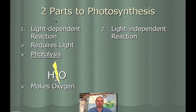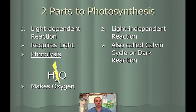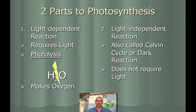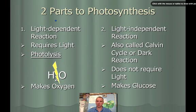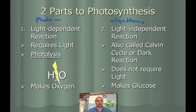The other part is the light-independent reaction, meaning it does not need light to go. Back when I was in school, it used to be called the dark reaction, but that's a misconception — it doesn't mean it takes place at nighttime. It's light-independent, meaning it could take place in darkness, but it just doesn't need light. You often hear it called the Calvin cycle or the light-independent reaction. This process is where actual glucose is made. So the photo part is the light-dependent reaction making oxygen, and the synthesis part is the light-independent reaction using byproducts to make glucose.